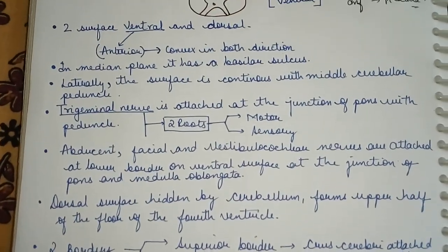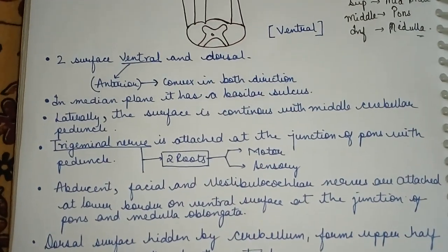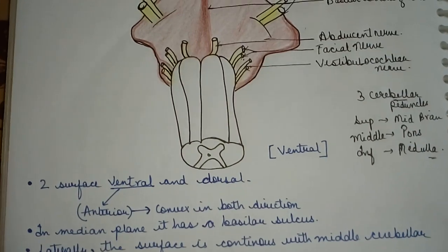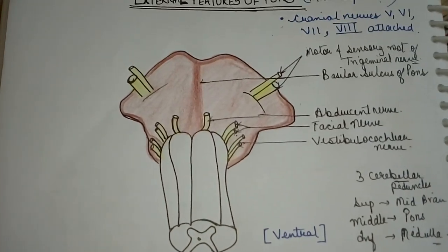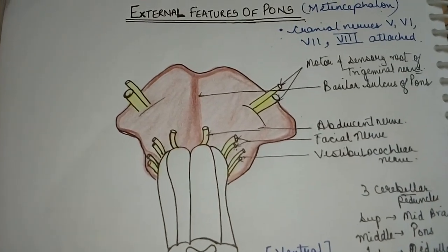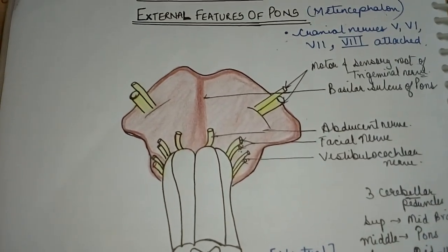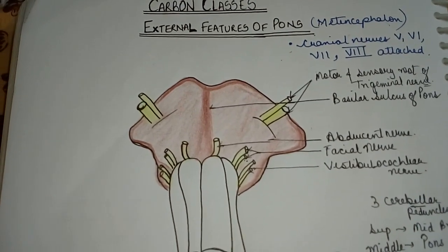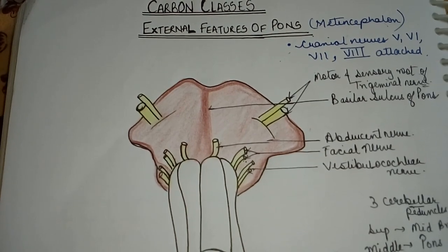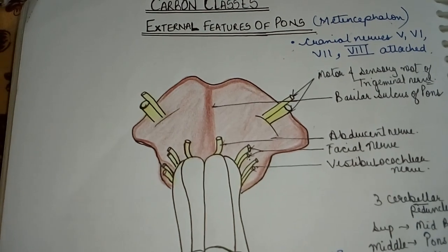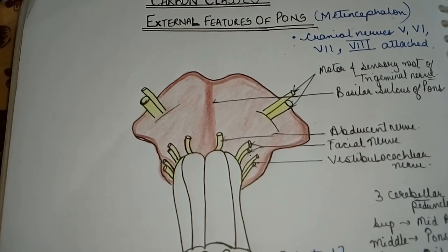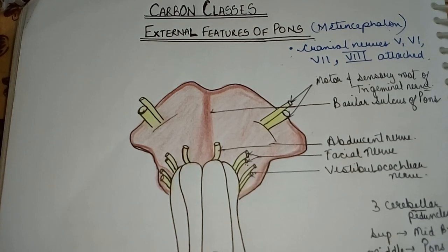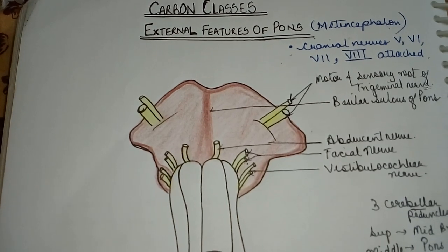This is all for today's lecture. Today we have studied about the external features of pons. The next lecture will cover the internal features of pons, in which we will study about the sections. Thank you friends, keep subscribing to Carbon Classes, and have a nice day ahead.